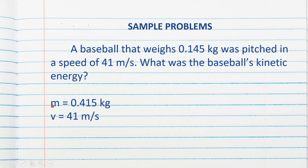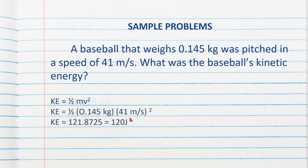Our given would be that mass is 0.415 kilogram and the velocity is 41 meters per second. Just substitute those givens and solve it. Square your velocity, then multiply it by the mass and one half. We would then have 120 joules.